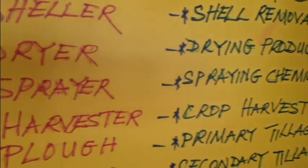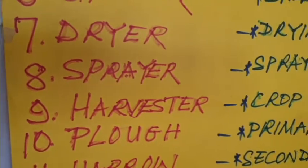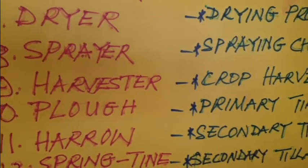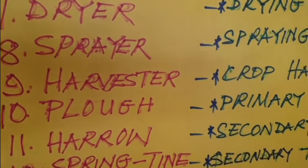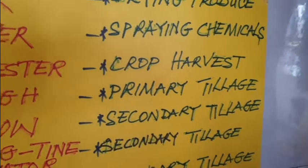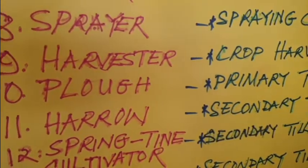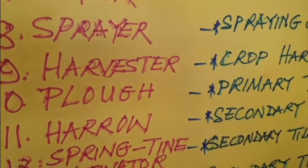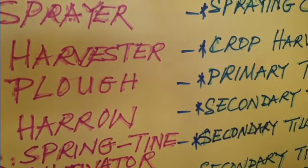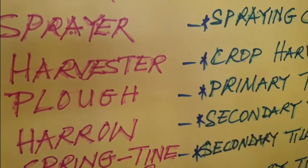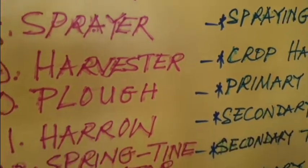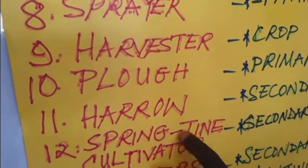Number nine is the harvester, used for harvesting of crops. Number ten is the plow — this is a primary tillage implement that is attached to the tractor. Primary tillage is the first tillage activity in cultivation of the land, done before harrowing and before planting can be done. That's the meaning of primary tillage — the first cultivating practice on the farm.